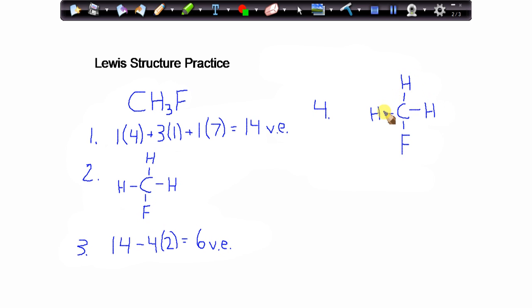For the carbon in the middle, it has satisfied the octet rule. It has ownership of eight valence electrons. But notice for the fluorine, currently it only has ownership of two valence electrons. It needs to gain ownership of six additional electrons in order to satisfy the octet rule. Notice that at the end of step three, my accounting step, I have six valence electrons remaining, so it makes sense to simply assign those six valence electrons to the fluorine atom.